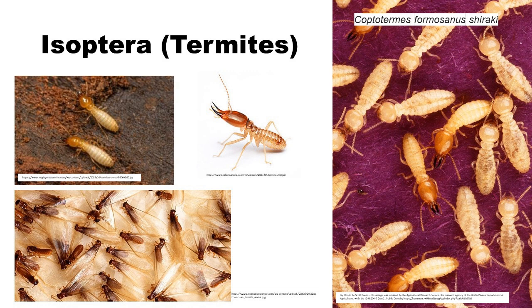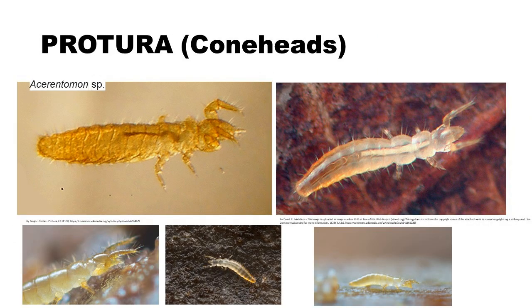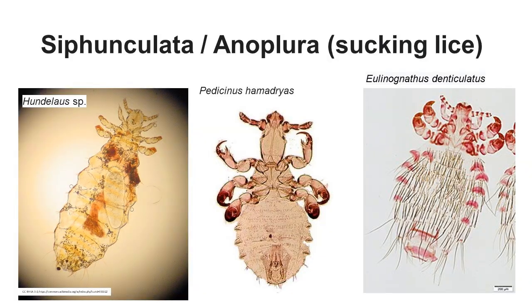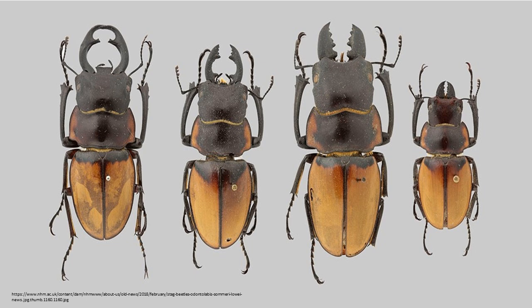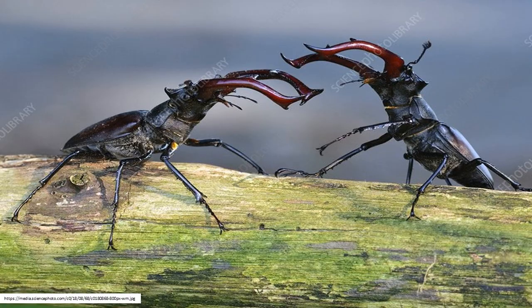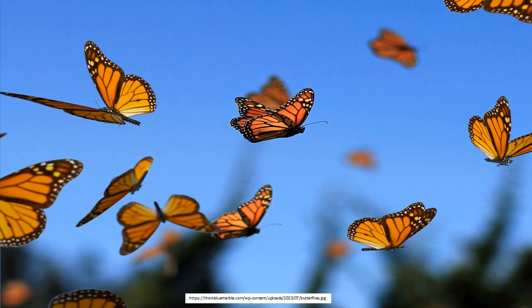The order Insecta, with its immense diversity, showcases the intricate beauty and adaptability of life. The phylogeny and taxonomy of insects reflects a complex web of evolutionary history, ecological interaction, and genetic diversity. From traditional morphological methods to cutting-edge molecular techniques, the classification of insects continues to evolve, providing deeper insights into the natural world. Understanding this rich tapestry of life not only enhances our knowledge of biodiversity, but also underscores the vital roles that insects play in ecosystems across the globe.